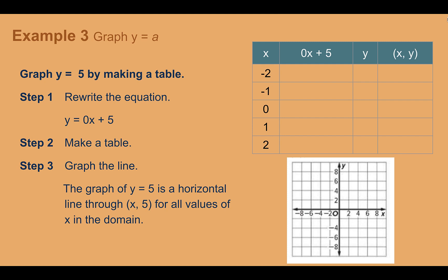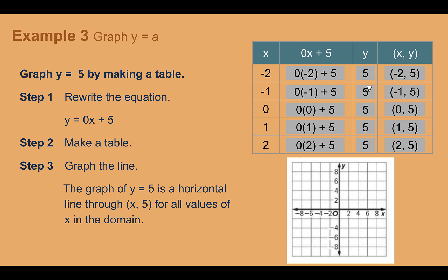Example 3: Graph y equals a. Graph y equals 5 by making a table. It doesn't look like what we had before — there is no x. So we rewrite the equation to show there are 0 x's: y equals 0x plus 5. Now we can plug in values. If we plug in negative 2, we multiply by 0 and add 5, getting 5. No matter what we plug in, we always get 5 out. So our coordinates end up making a horizontal line. If you ever see y equals a number, it's going to be a horizontal line through that number.